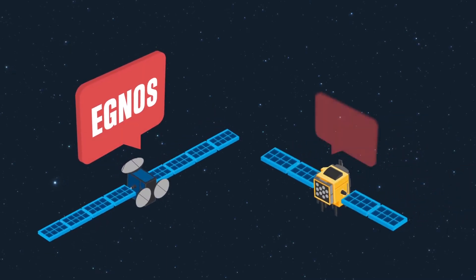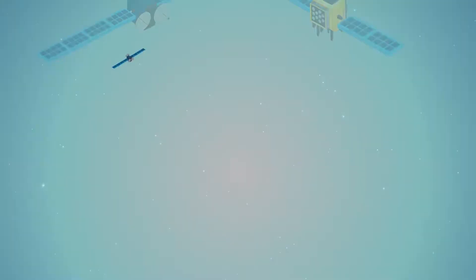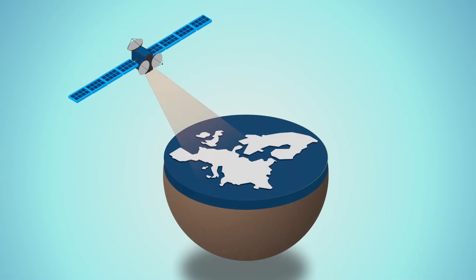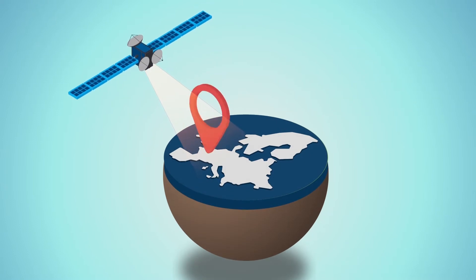First of all, let's look at what these two systems are. EGNOS is Europe's satellite augmentation system that makes GPS a lot more reliable and accurate in Europe.